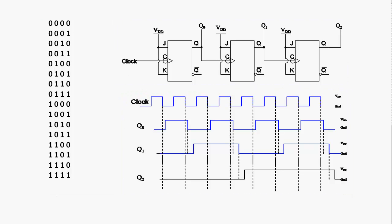If we look at the counting sequence overall, we start with all outputs at zero: Q2, Q1, Q0 all zero. Then the next clock cycle we have 0-0-1, then 0-1-0, then 0-1-1, then 1-0-0, then 1-0-1, then 1-1-0, then 1-1-1. So we're counting from zero up to seven.